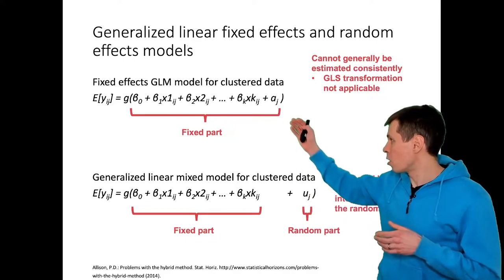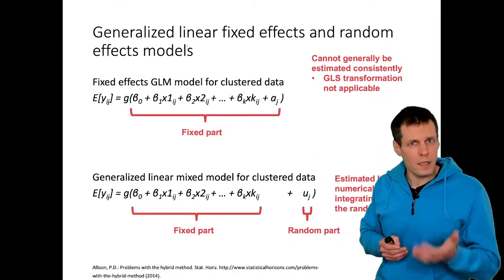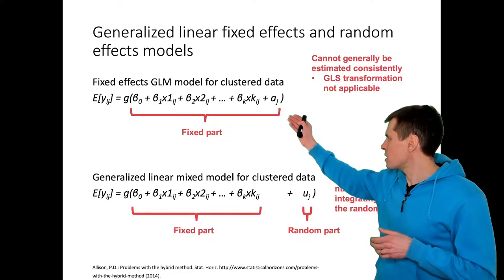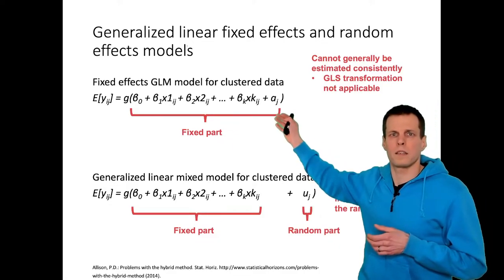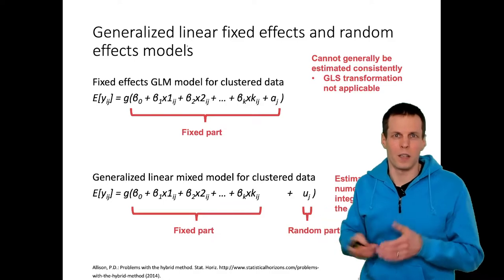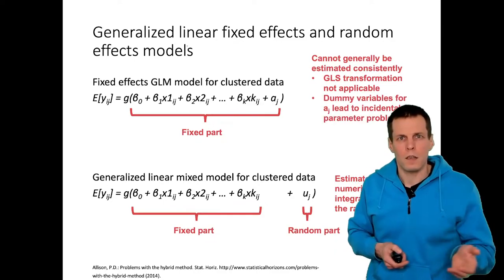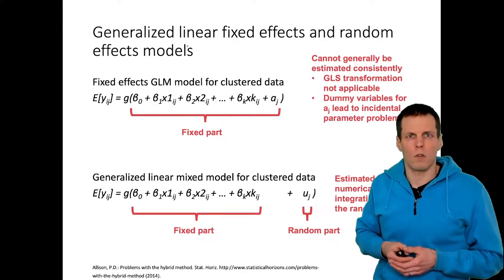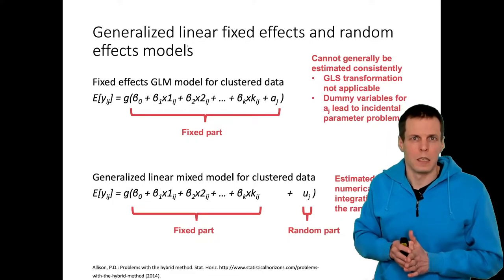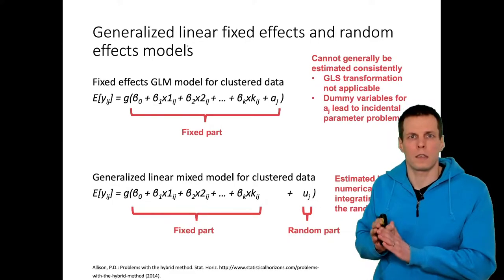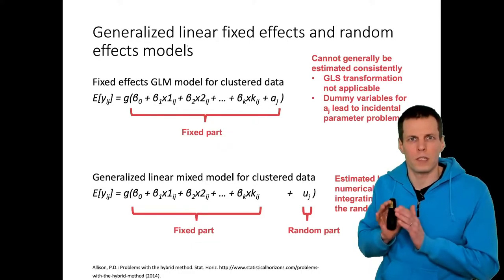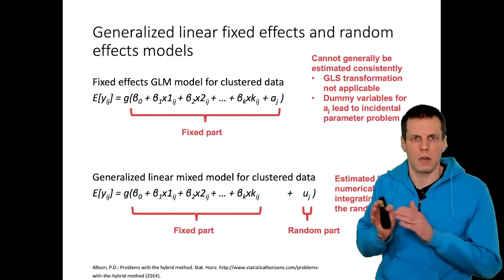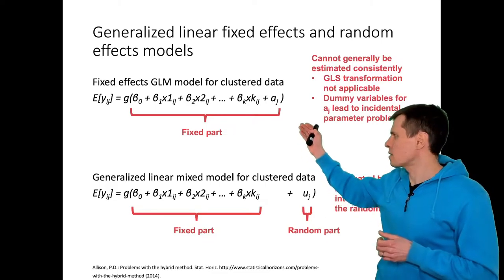Centering eliminates the unobserved effect a_j. However, when we have a non-linear model, centering can't be applied because a_j is inside the link function — we can't simply subtract it with a transformation. The second way of estimating is the dummy variable model: include dummies for all clusters or groups and estimate with OLS. That works because OLS is unbiased, but it does not work with GLMs because ML estimates of GLM models are generally biased.